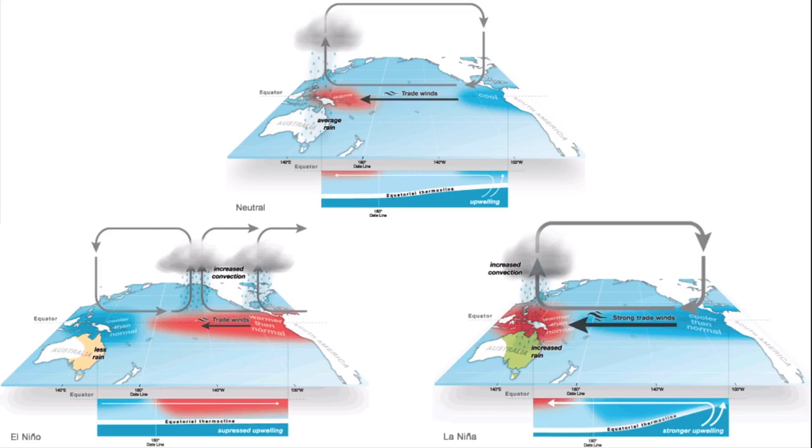In La Niña, the switchback from El Niño, this intensifies the normal state. And so more rains will occur over Australia, and more intense upwelling will happen near South America.